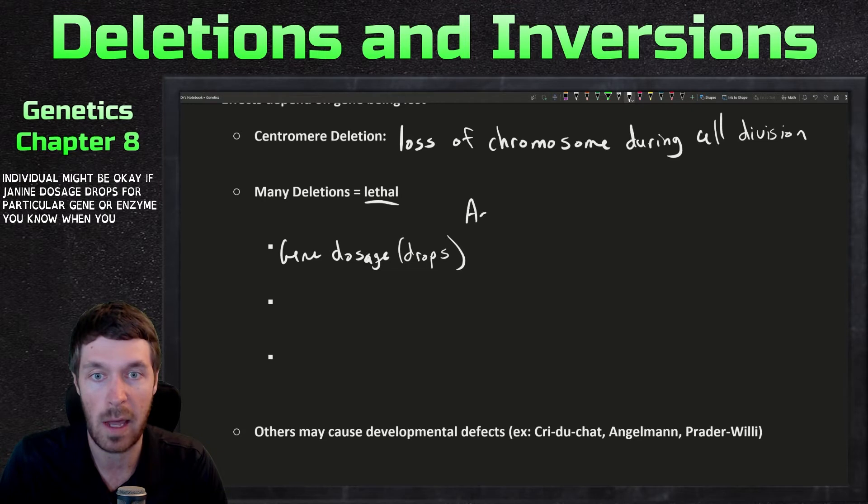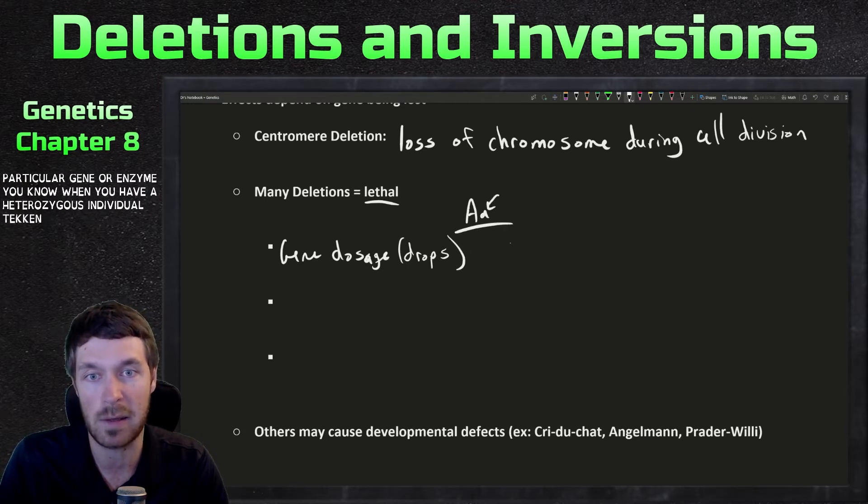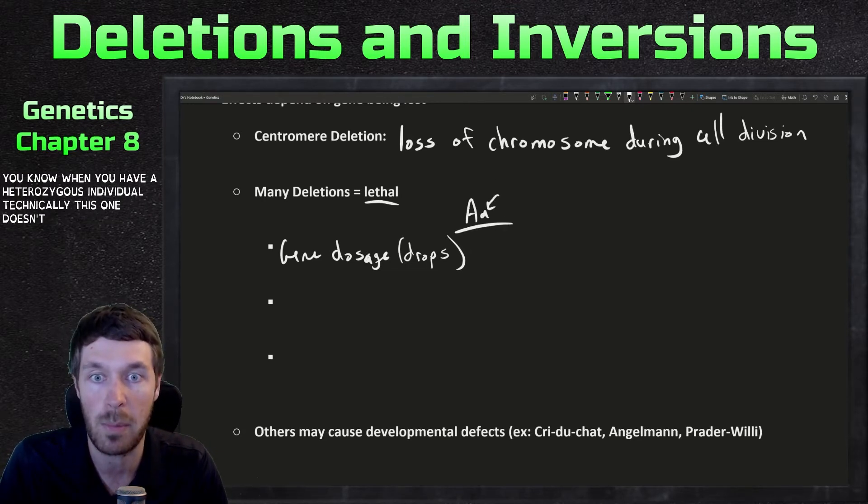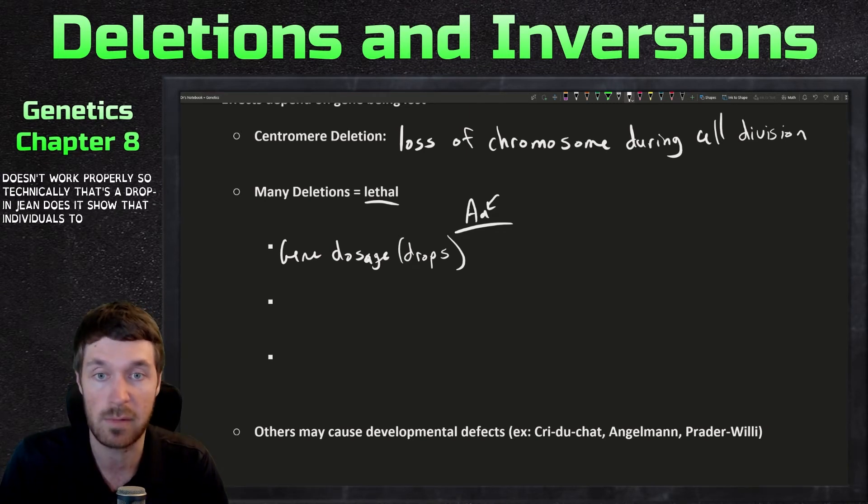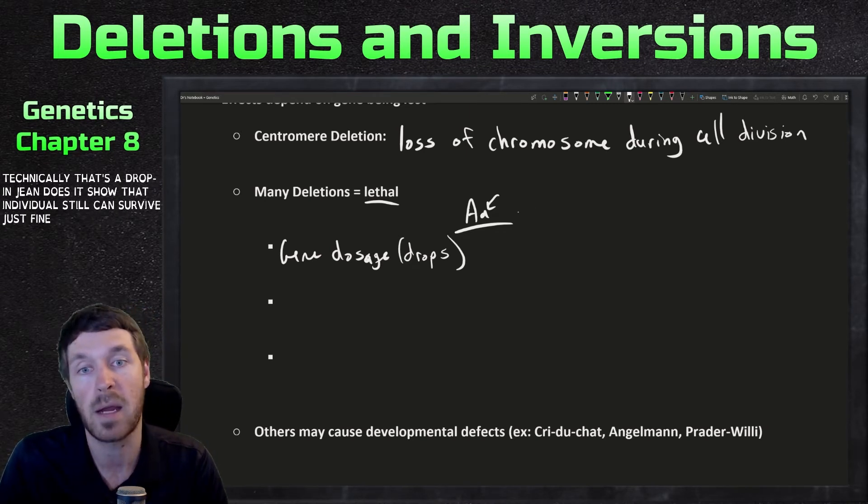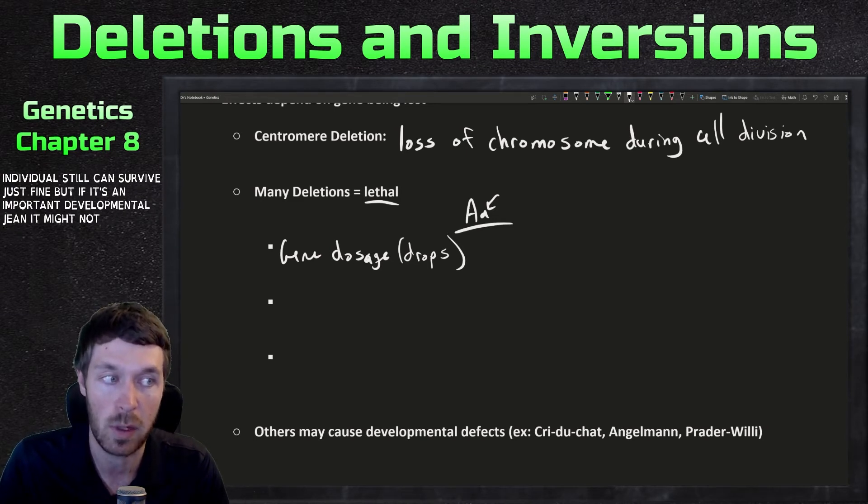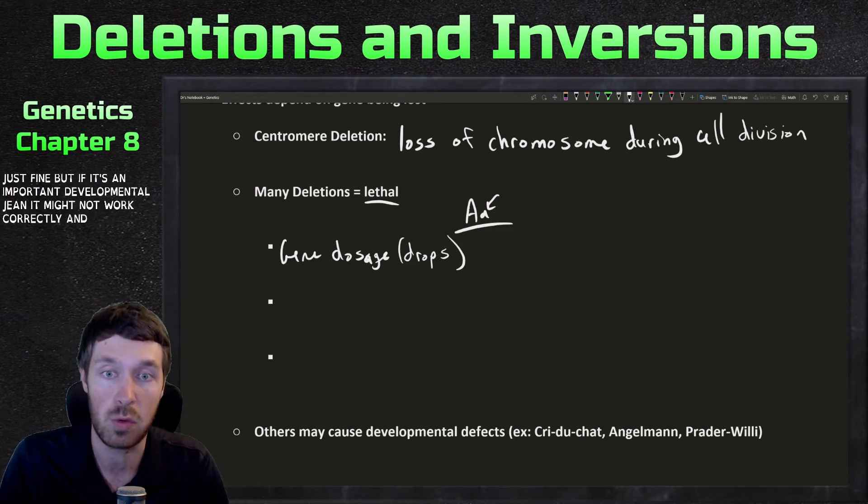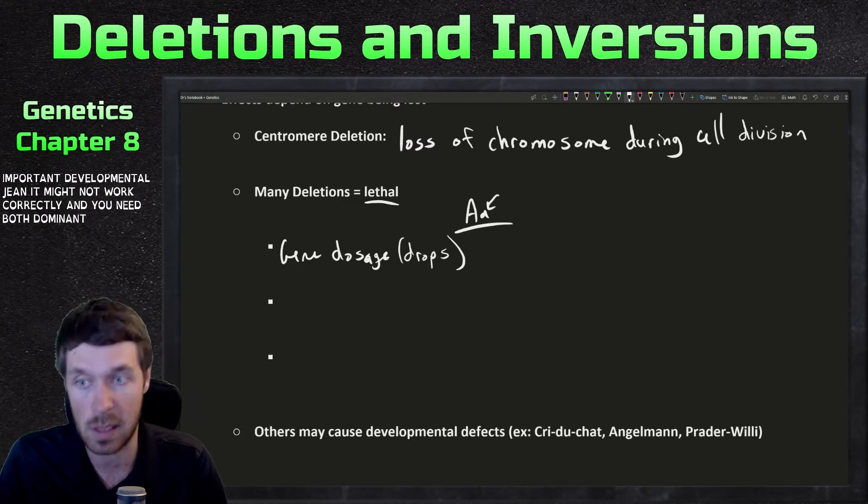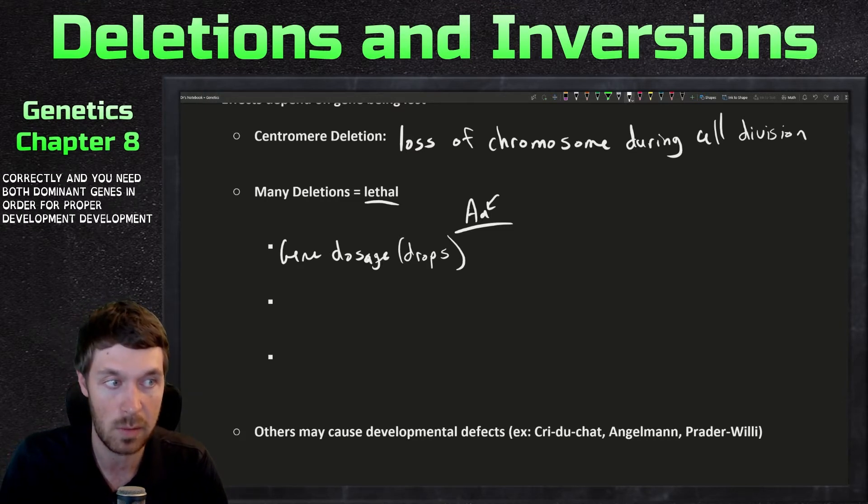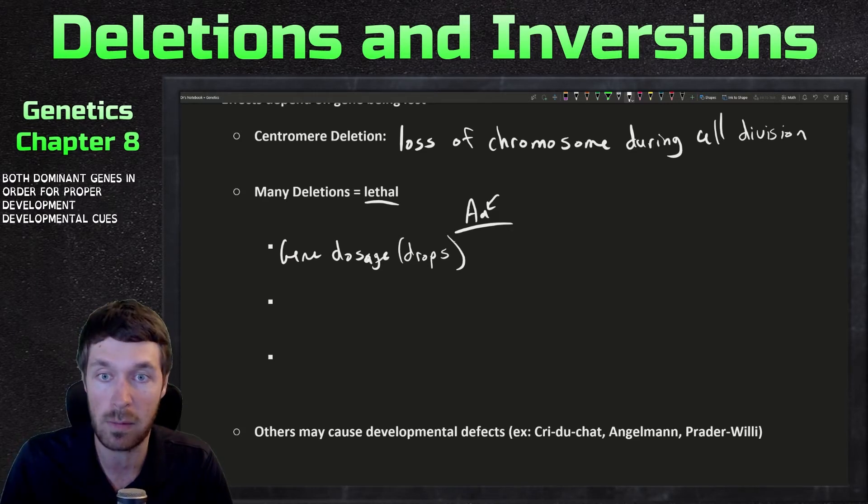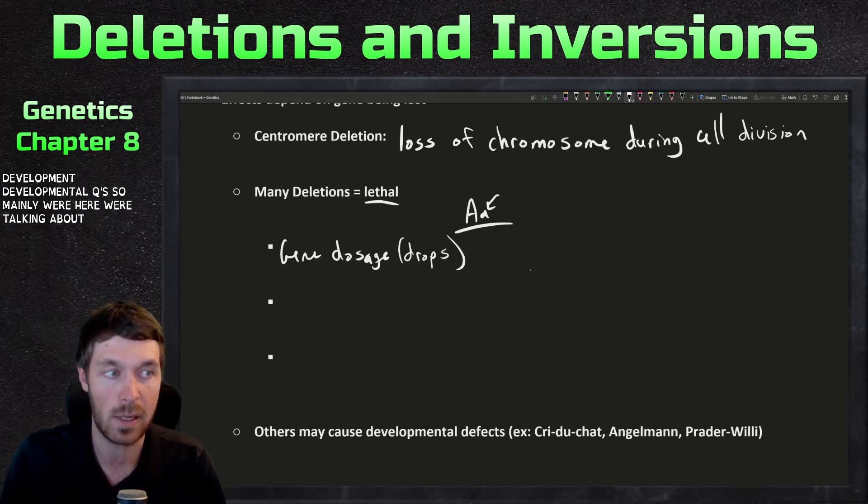So because we lose one of the alleles, gene dosage drops. And so depending on the situation, the individual might be okay if gene dosage drops for a particular gene or enzyme. When you have a heterozygous individual, technically this one doesn't work properly. So technically that's a drop in gene dosage. So that individual still can survive just fine. But if it's an important developmental gene, it might not work correctly. And you need both dominant genes in order for proper development and developmental cues.